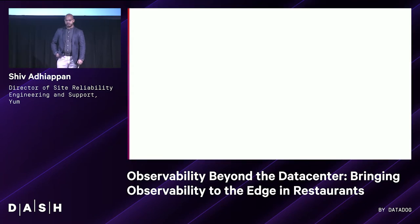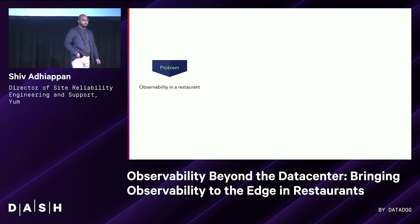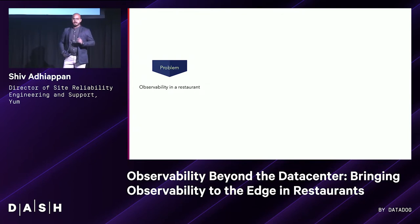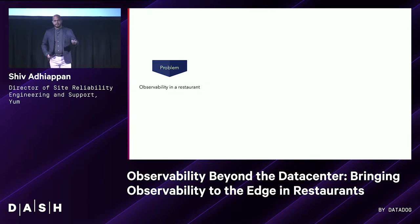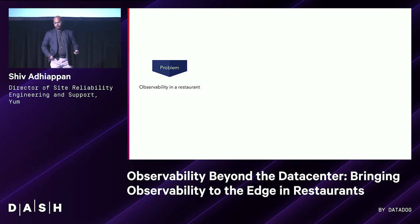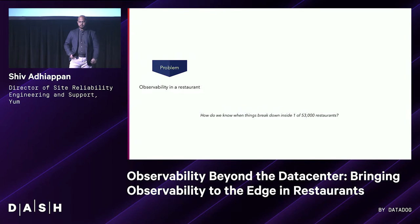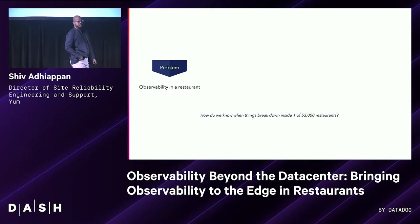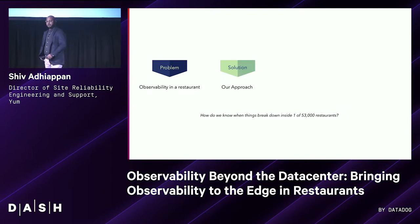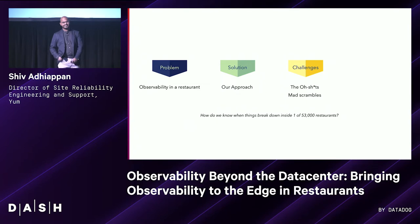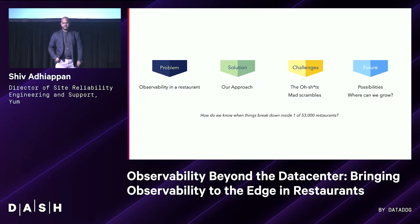In today's talk, I'm focusing on the in-store restaurant segment. It's not as straightforward as the cloud environment where you have a lot of APIs and lab environments. The problem we're looking to solve is: how do we know when things break down in one of these 50,000-plus restaurants across the globe? Our team took a step at this. I want to talk about our approach, the challenges we faced, the solutions we found, and our future next steps.